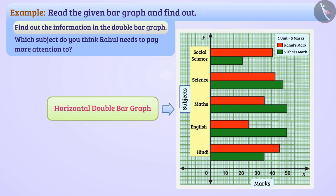Here, names of subjects are shown on the y-axis and the marks are shown on the x-axis. The red color in the pair of bars indicates Rahul's marks and green bars indicates Vishal's marks. Therefore, we can say that this double bar graph compares the marks obtained by Rahul and Vishal in various subjects in an examination.